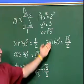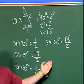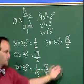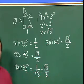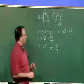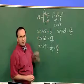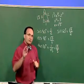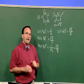We could continue and find the cosine of 60, the tangent of 60, as well as all the reciprocal functions, but that's how you use the special 30-60-90 triangle to find the trig functions of 30 and 60 degrees.